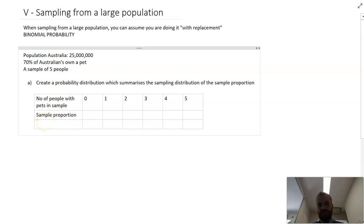Now here is my sample proportion which we call p hat. And we're going to write in our sample proportions here. So zero percent of the sample has a pet, 0.2, 0.4, 0.6, 0.8, and a hundred percent of the sample has a pet.